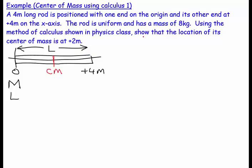It says this thing about using the method of calculus shown in physics class. That's my attempt for my class to make sure that they know the basic science behind it rather than simply knowing how to do an integration. So I need a relationship that links these things. And the relationship that comes to mind is that my x center of mass is equal to, for a distributed mass, 1 over the total mass times the integral of r dm.